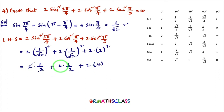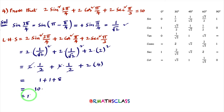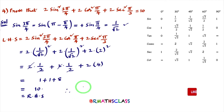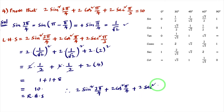Simplifying: 2·(1/2) + 2·(1/2) + 8 = 1 + 1 + 8 = 10. So we got the RHS. Hence we proved: 2·sin²(3π/4) + 2·cos²(π/4) + 2·sec²(π/3) = 10.